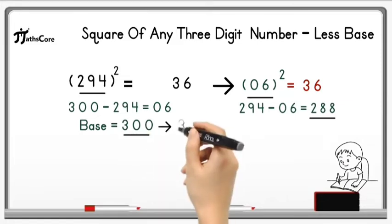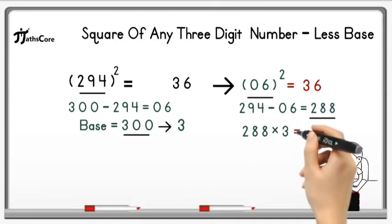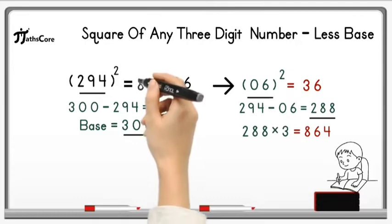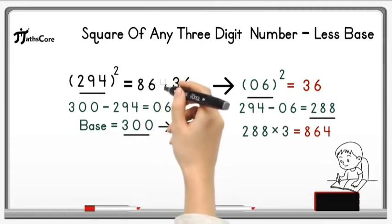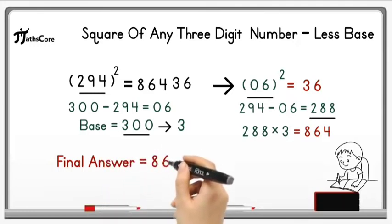But instead of 300 we will just write 3 here. So 288 multiply by 3 is equal to 864. Now write down 864 before 36 in a product. And this is your final answer, 86,436.